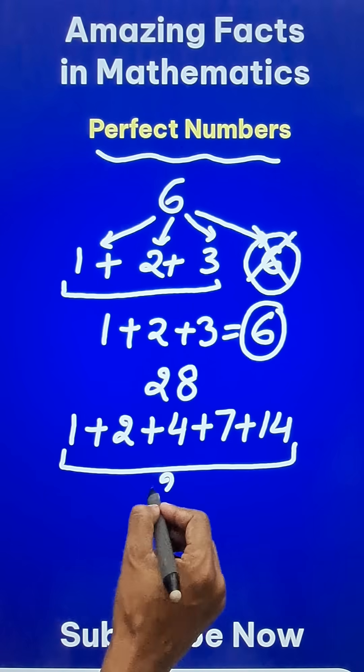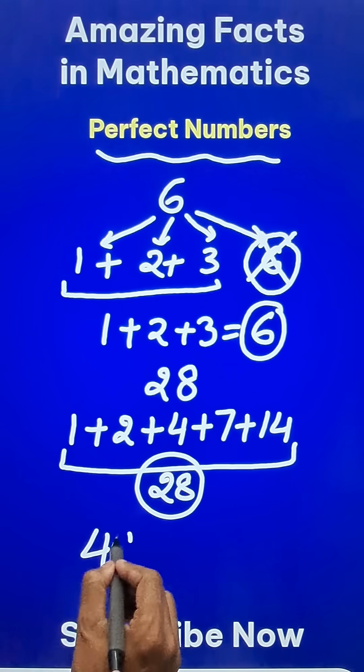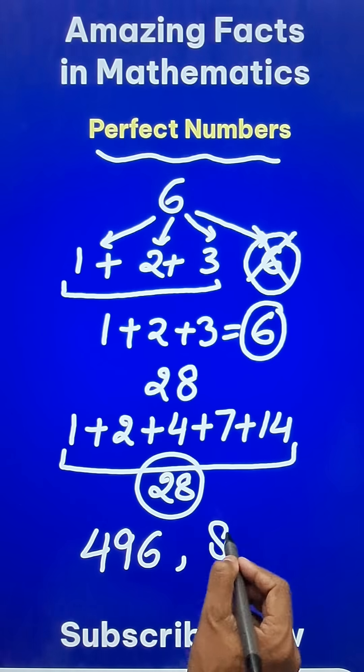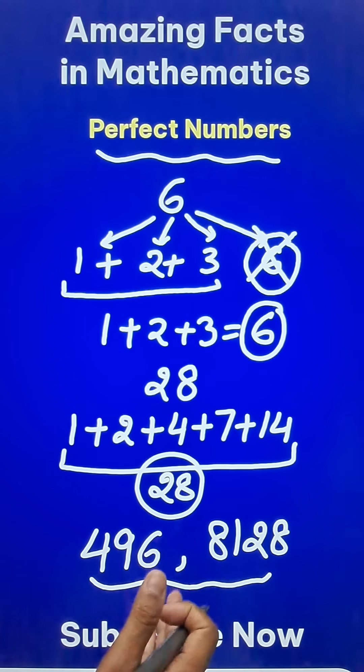you will get 28 as the result. Do you know that the only 3-digit perfect number is 496, and the 4-digit perfect number is 8,128? Just make factors of these numbers and check whether they are perfect numbers or not.